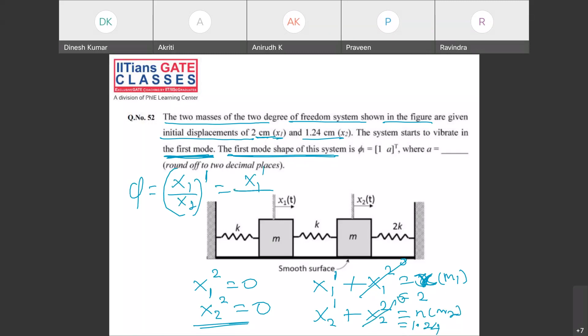We know phi is always X₁ upon X₂ corresponding to first mode. So it is X₁₁ upon X₂₁, which is 2 upon 1.24. So this is nothing but 1 upon 1.24 by 2, which is 1 by 0.62. So what is the answer? The A value is 0.62.